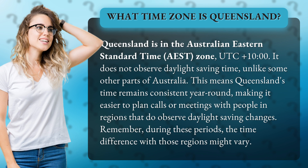Unlike some other parts of Australia, this means Queensland's time remains consistent year-round, making it easier to plan calls or meetings with people in regions that do observe daylight saving changes. Remember, during these periods the time difference with those regions might vary.